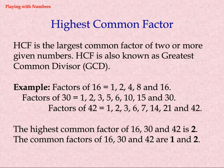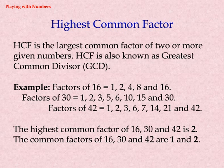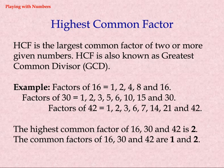Highest Common Factor (HCF) is the largest common factor of 2 or more given numbers. HCF is also known as Greatest Common Divisor (GCD). Example: factors of 16 are 1, 2, 4, 8, and 16. Factors of 30 are 1, 2, 3, 5, 6, 10, 15, and 30. Factors of 42 are 1, 2, 3, 6, 7, 21, and 42. The common factors of 16, 30, and 42 are 1 and 2. The highest common factor of 16, 30, and 42 is 2.